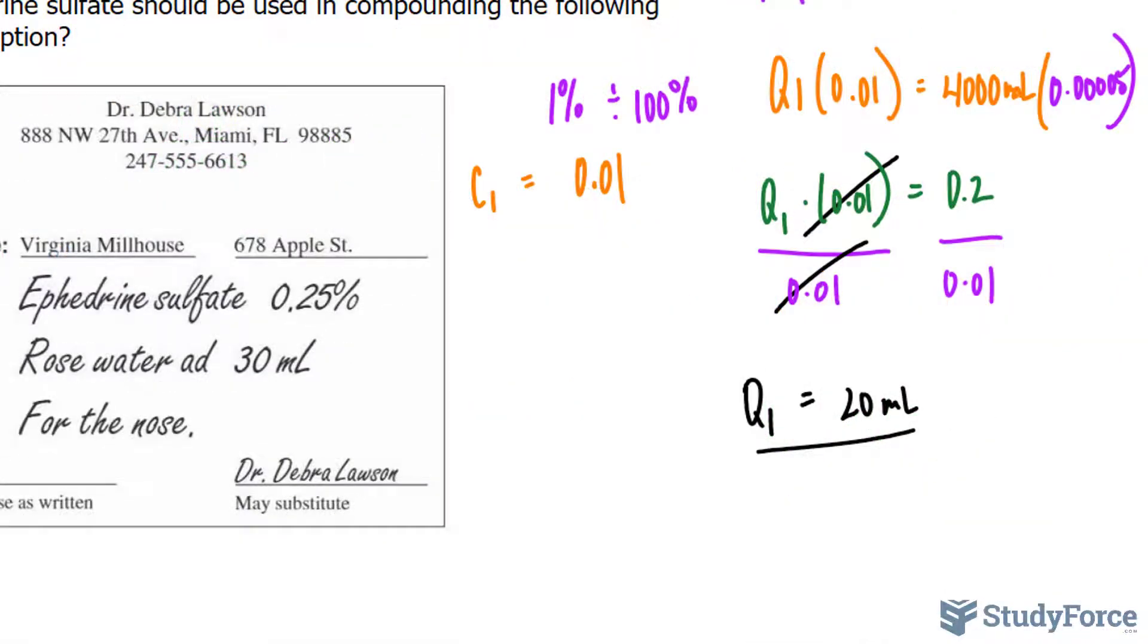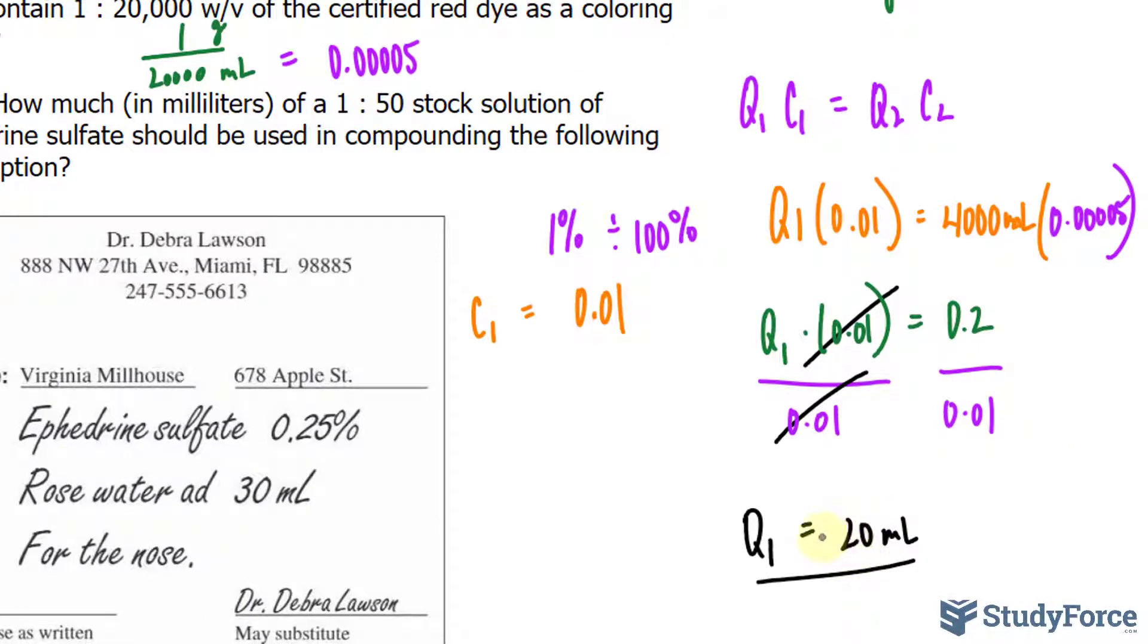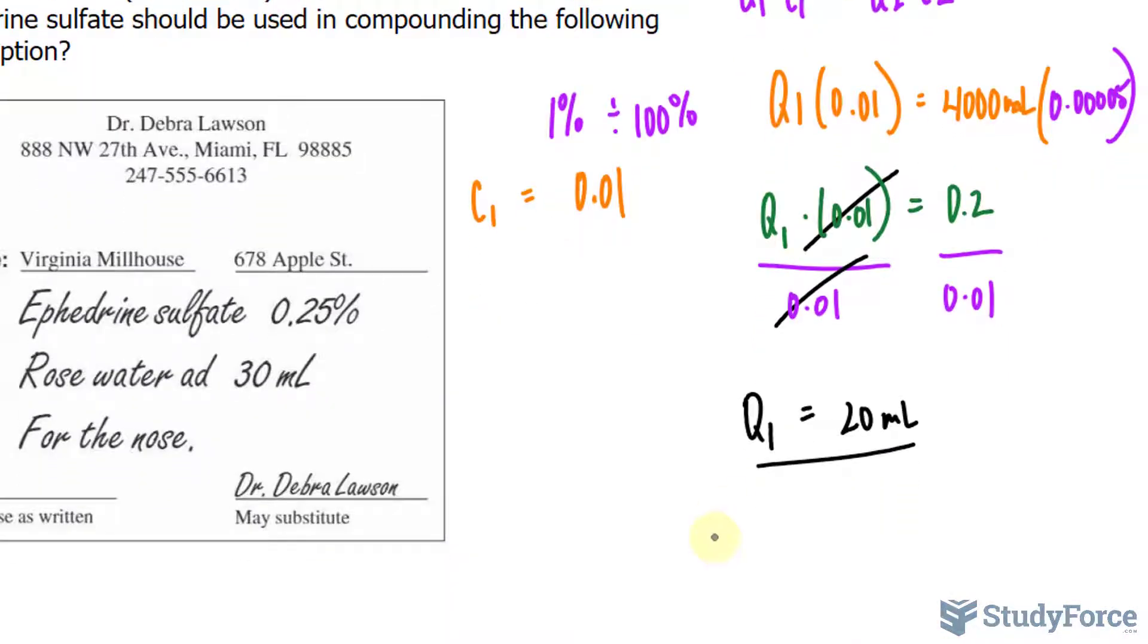Before we move on to the final question, in case they ask you for the active ingredient or the amount of active ingredient in the stock solution, what you do is you take this value of 20 milliliters and you multiply it by its concentration of 0.01.